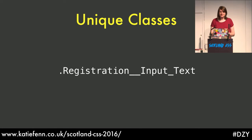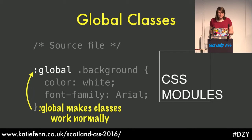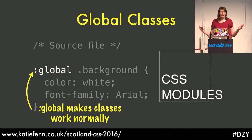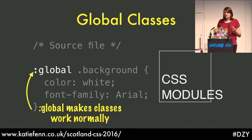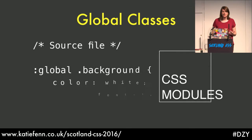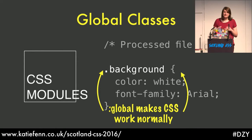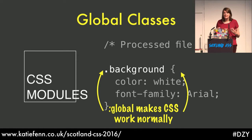Sometimes you want to write global styles instead, like setting fonts and colors throughout the application on any class that appears anywhere. If you want to do this, you add the global keyword to a selector and that makes it work normally. If we have a look at the output, we can see that classes pass through without being transformed and they'll work normally.